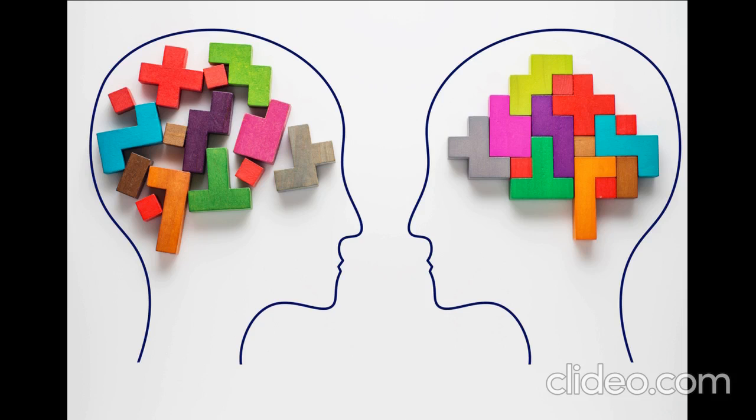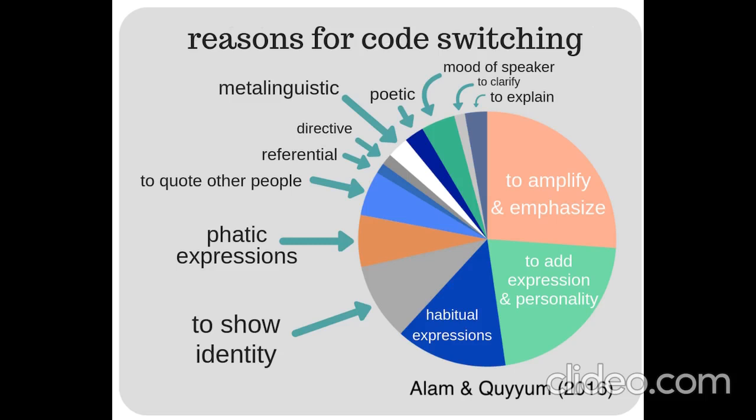This phenomenon changes one's language style according to the interlocutor, the topic being discussed, and the place one is in, and occurs in social groups mainly according to age, social class, geographical location, education and ethnicity. All these characteristics play a crucial role in how and when people change codes.